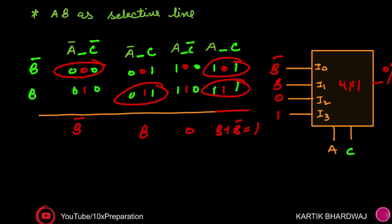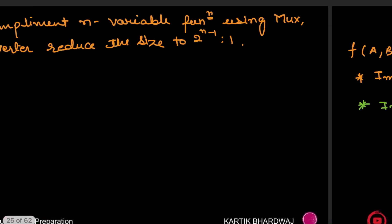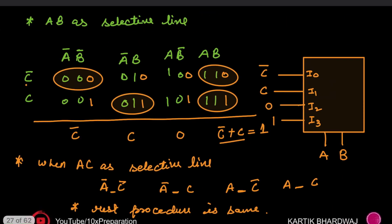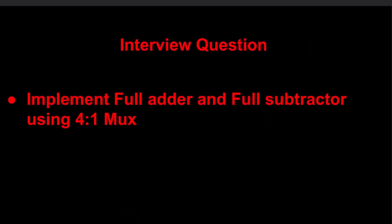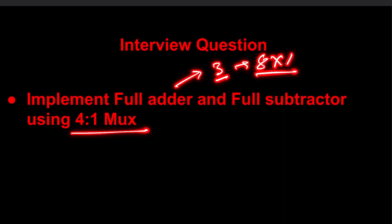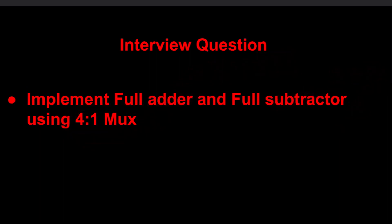This is the same function implemented different ways to show how MUX size can be reduced. Returning to our original motivation: for a full subtractor with three inputs, an 8×1 MUX is required, but using this MUX reduction technique with one inverter you can reduce it to a 4×1 MUX. In the next lecture I will explain this in a more detailed and collaborative way. Please try it on your own first.